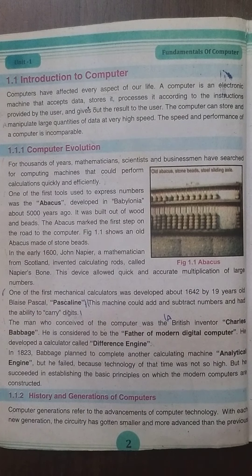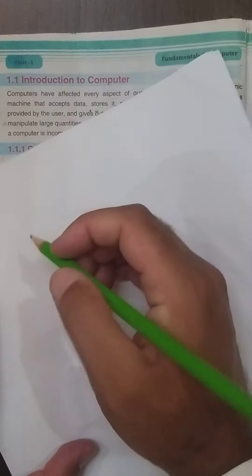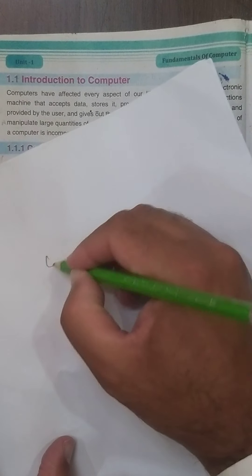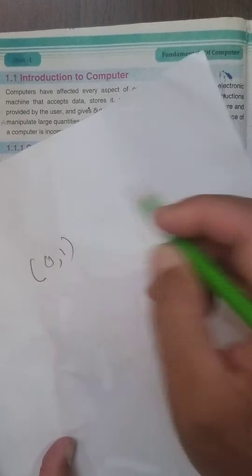بچے، computer کے بارے میں پڑھنے سے پہلے آپ جانیں کہ computer اصل میں ہے کیا، computer کسے کہتے ہیں۔ یاد رکھیں، computer ایک electronic device ہے۔ Electronic device کا مطلب ہے جو electric current پر process ہو سکے، کام کر سکے۔ ہمارے پاس جتنے بھی electronic devices ہیں وہ سارے کام کرتے ہیں binary language پر۔ Binary language ہے zero and one — یہ machine language ہے۔